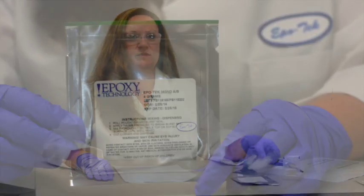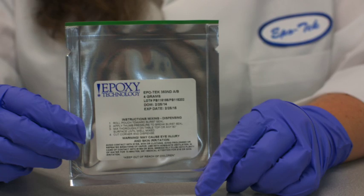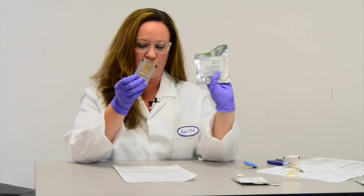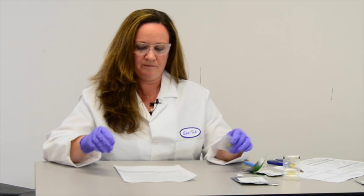First, remove the BiPAC from its protective foil-lined outer package. This protects the material from any possible contaminants, such as chemicals or moisture. For additional moisture protection, the pouch also contains a desiccant.